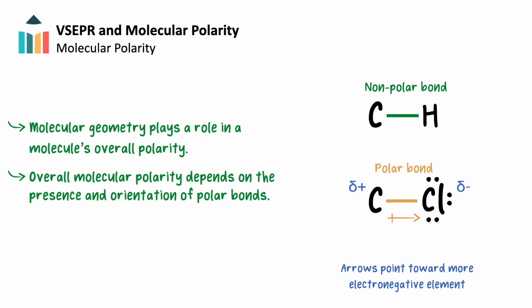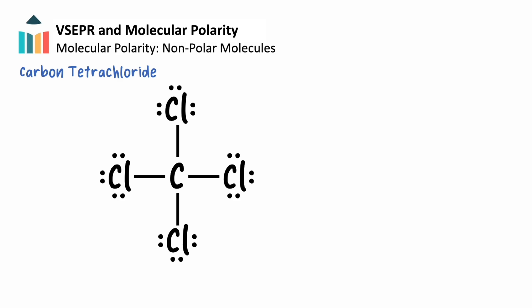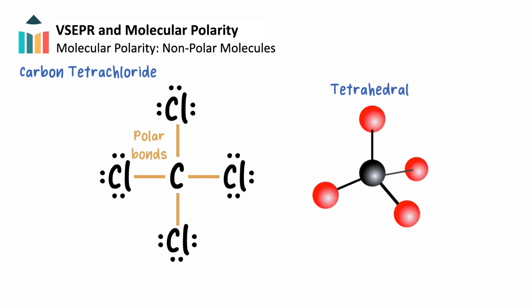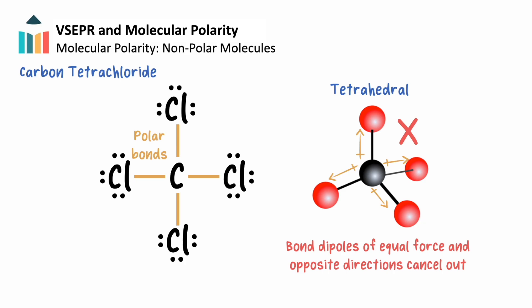Let's dive into this by looking at two molecules that have polar bonds but are overall considered to be nonpolar. To start, carbon tetrachloride has four polar bonds. Its tetrahedral structure points the individual bond dipoles of each carbon-to-chlorine bond in opposite directions. Being pulled with equal force in opposing directions, these bond dipoles will cancel each other out, making carbon tetrachloride a nonpolar molecule.